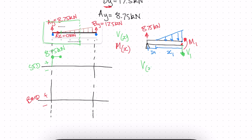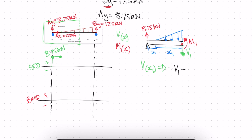Writing the shear as a function of x1: we have negative V1, then positive 8.75 kilonewtons going up. I prefer to draw shear in the negative direction and moment in the positive direction — though you can draw them either way. So we have negative V1, plus 8.75 kilonewtons, and the distributed load acting downward.